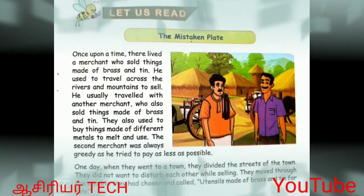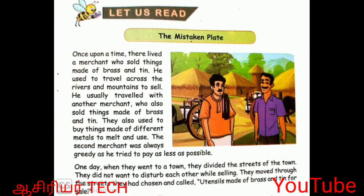Let us read 'The Mistaken Plate'. Once upon a time, there lived a merchant. He sold things made of brass and tin. He used to travel across the rivers and mountains to sell. He usually travelled with another merchant who also sold things made of brass and tin.